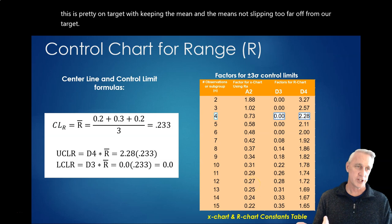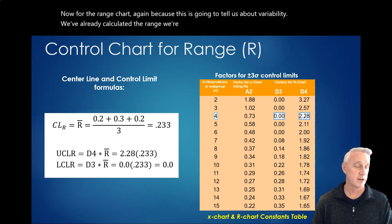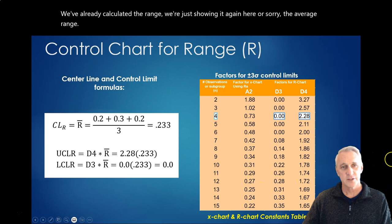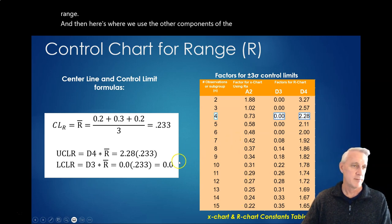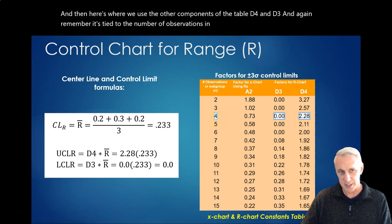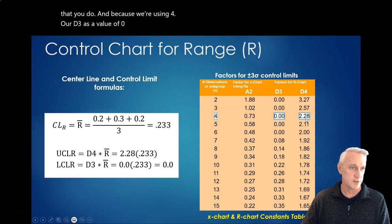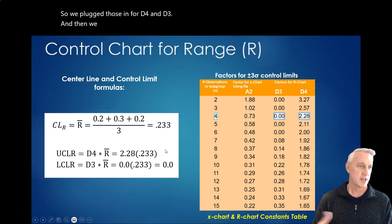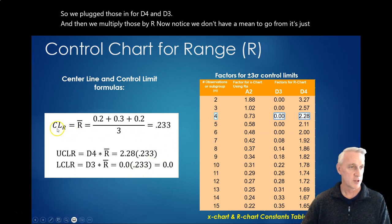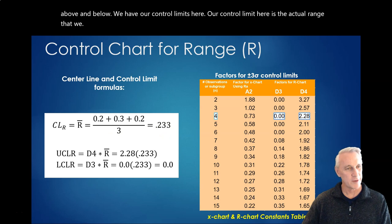Now, for the range chart, again, because this is going to tell us about variability, we've already calculated the range. We're just showing it again here, the average range. And then here's where we use the other components of the table, D4 and D3. And again, remember, it's tied to the number of observations in each sample, in each random sampling that you do. And because we're using 4, our D3 is a value of 0, our D4 is 2.28. So, we plug those in for D4 and D3, and then we multiply those by R. Now, notice we don't have a mean to go from, it's just above and below. We have our control limits here. Our control limit here is the actual range that we actually see. So, it's kind of the mean of our ranges if you think about it that way. So, that becomes our control line. And so, now we plot these three lines.